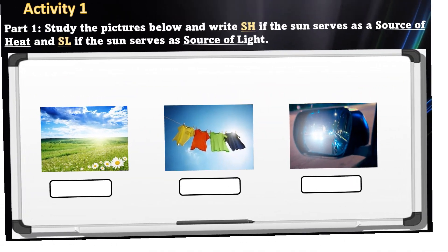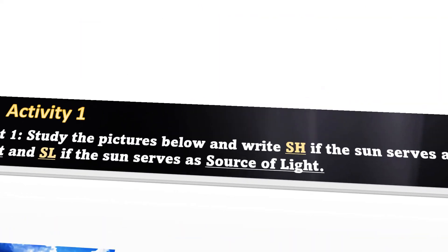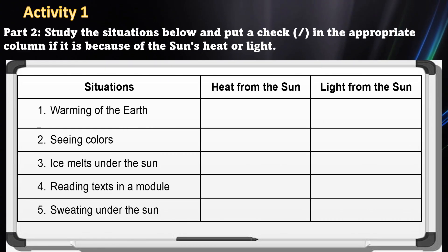For activity number one, part one, study the picture below and write SH if the sun serves as the source of heat and SL if the sun serves as a source of light. For part two, study the situation below and put a check in the appropriate column if it is because of the sun's heat or light.